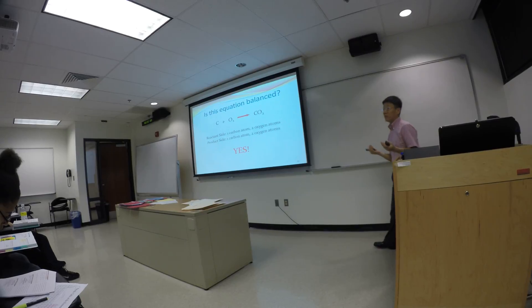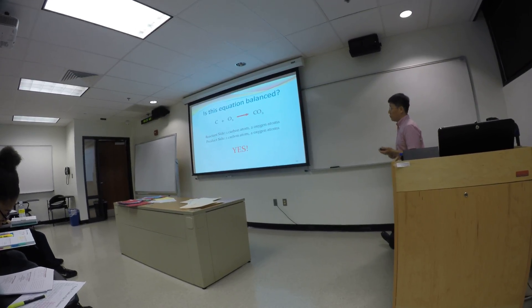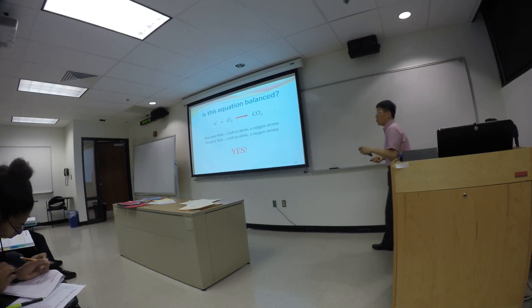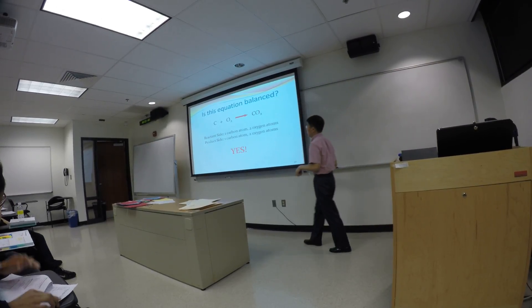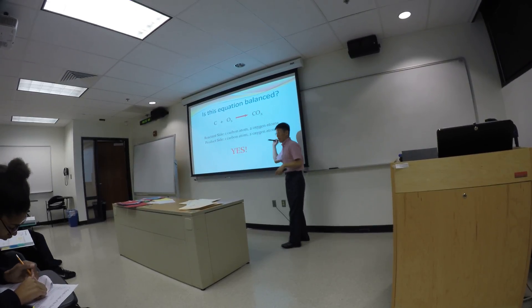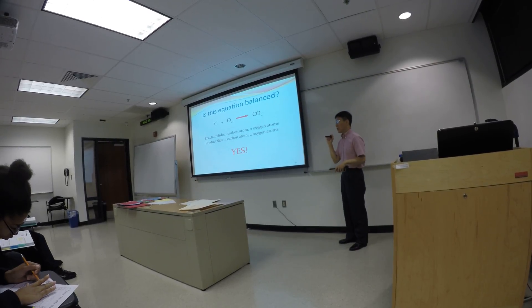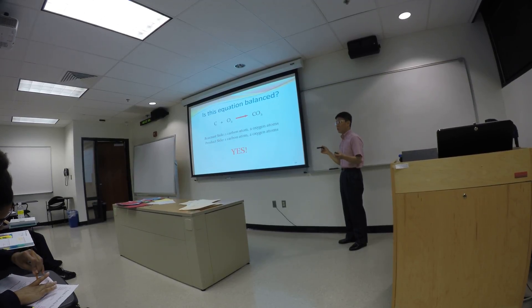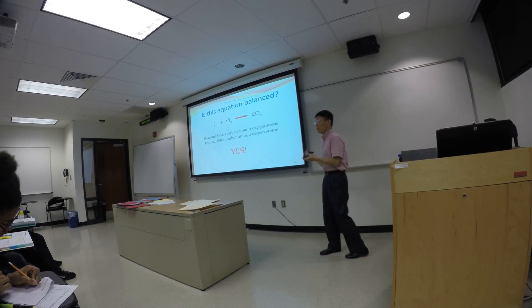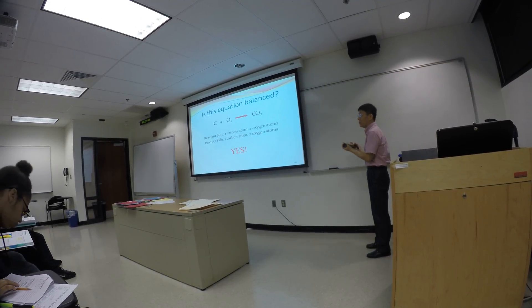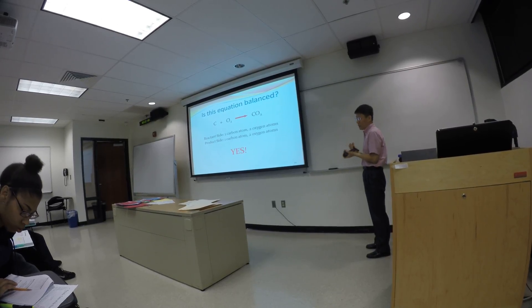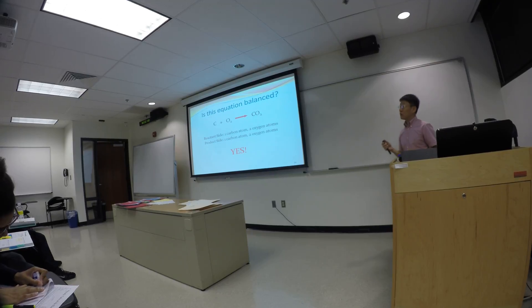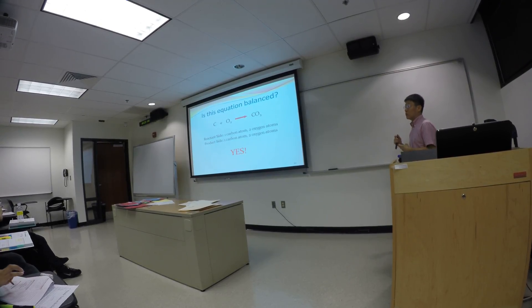If you end up with the same number of atoms of each kind on both sides, then you have a balanced equation. Before you can do any calculations involving the chemical reaction equation, you have to make sure it's balanced to begin with. If it's not balanced, you can't use that equation for calculations, simply because that statement is incorrect or incomplete. So the first thing you need to do is always check the equation and make sure it's balanced.